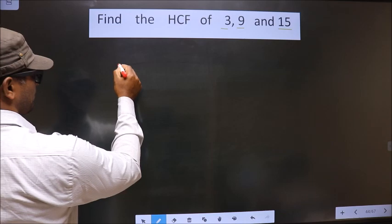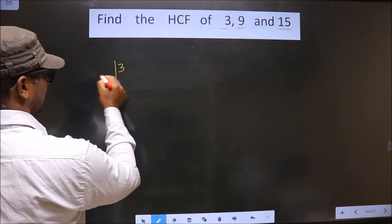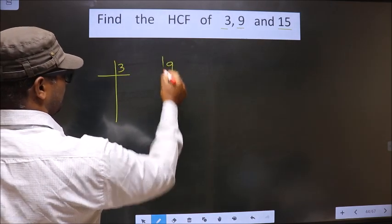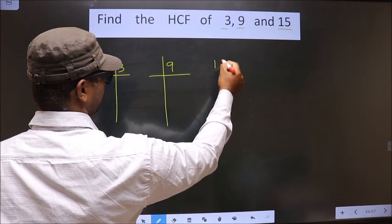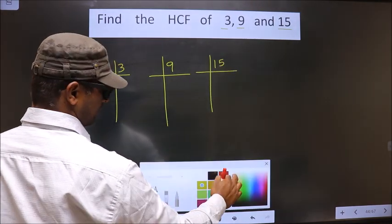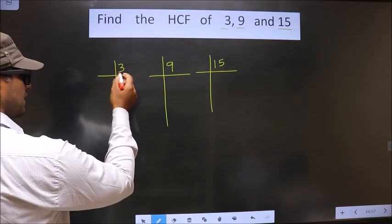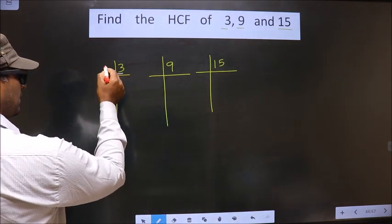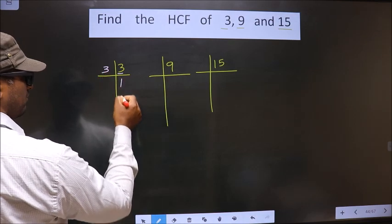That is 3, 9, 15. Now, for this number, 3 is a prime number, so we take 3 and 1.